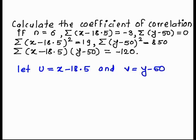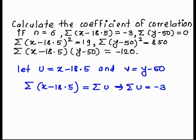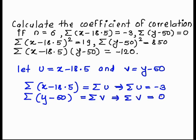To solve this question, we consider u is equal to x minus 18.5 and v is equal to y minus 50. Substituting these values, we get: summation of u is equal to minus 3, and summation of v is equal to 0.